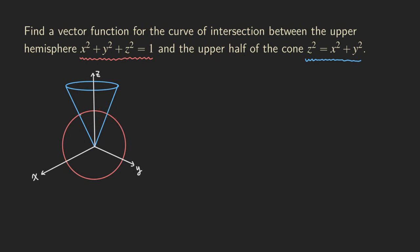Where do they intersect? They intersect at this location right here. When they intersect at that location, they have the same Z values — all those points on the curve have the same Z value. So what we want right now is to set the Z equal to each other. We can make a substitution — we substitute Z² = X² + Y² into the sphere equation so that we can come up with the equation representing the curve of intersection.